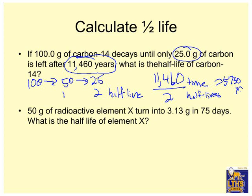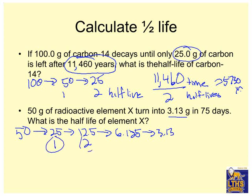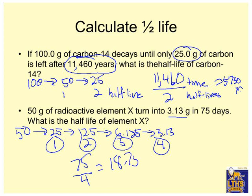50 grams radioactive element X turned into 3.13 in 75 days. So 50, what's the half-life? 25, 12.5. By the way, I'm just dividing it by two every time. 6.125. 3.13. So that means it took one, two, three, four. You can count the arrows. So 75 over 4. 75 divided by 4 is 18.75 days. So it's okay to do that simple thing in that route.